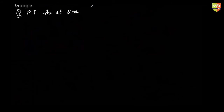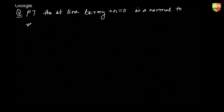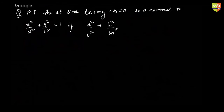One more question: prove that the straight line lx + my + n = 0 is a normal to the standard form of the ellipse if a²/l² + b²/m² = (a² - b²)²/n².